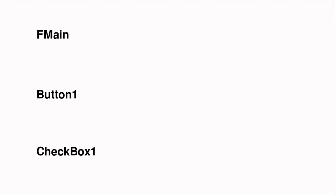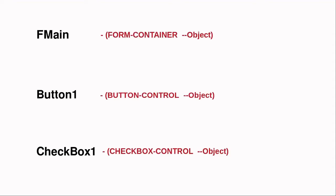Within object-oriented programming in general, there are various objects which exist. In Gambas, for example, there are forms, secondary containers, and numerous GUI controls which can be used to construct a GUI program.